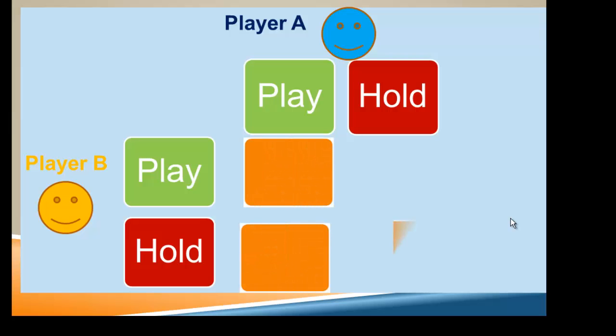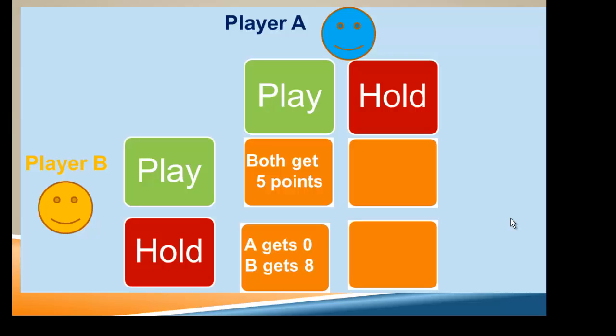That means there's four possible outcomes. If both players play, they both earn five points. But if player A plays and player B holds, then A gets zero points and B gets eight.